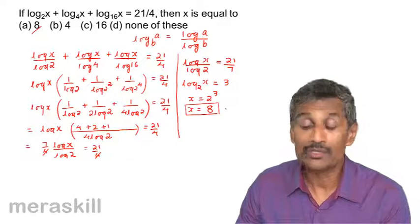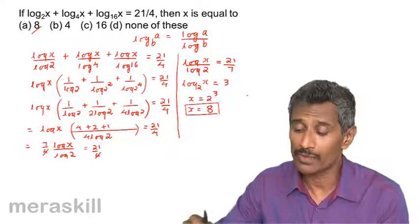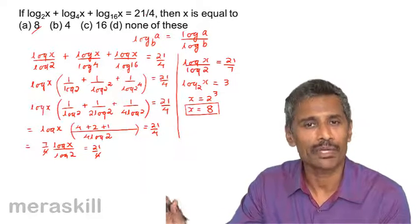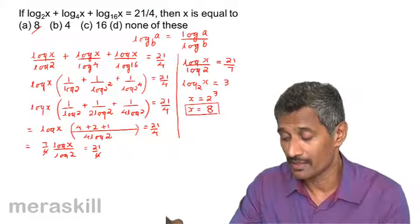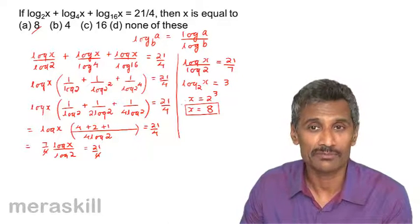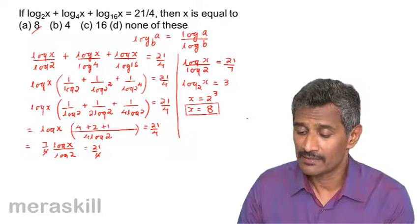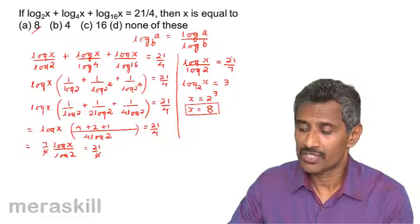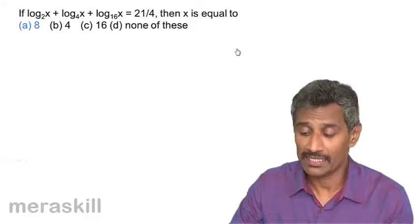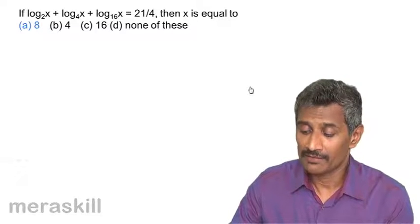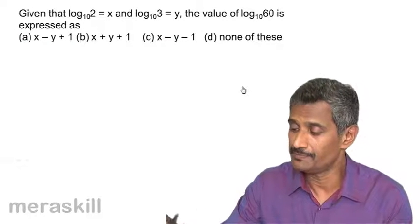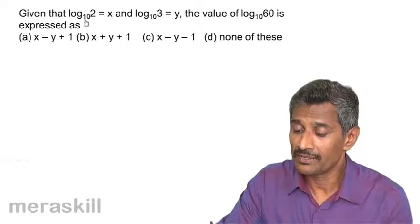So that's how we solve this type of problem: convert using change of base to base 10, take LCM, simplify, then convert back to get log x to base 2 equals 3, giving x equals 8. As I said earlier, whenever you have these kinds of problems, keep a pencil and start working. Pause the video and continue to check how it works. The answer is 8.